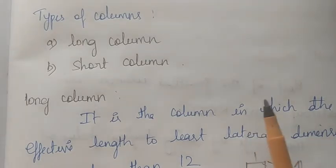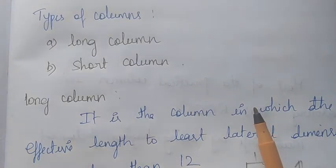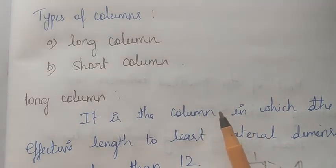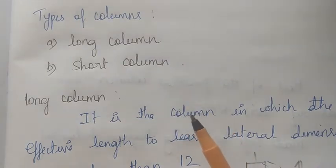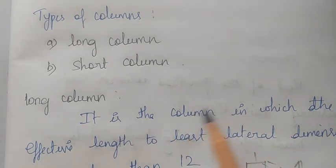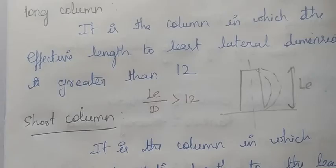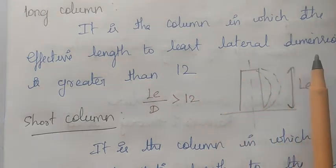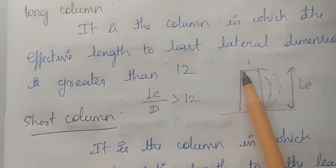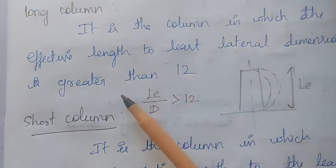Next are the types of column by shape or material — steel and reinforced columns. There is a concept: the long column is one in which the ratio of effective length to least lateral dimension is greater than 12. So when we add this ratio and it is greater than 12, we call it a long column.